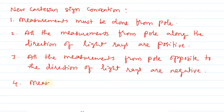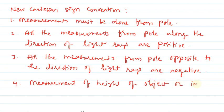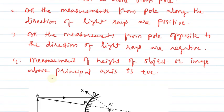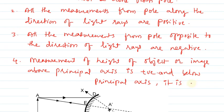Fourth point: measurement of height of object or image above the principal axis is positive, and below the principal axis it is negative. These are the new Cartesian sign conventions. Now let us apply these conventions.